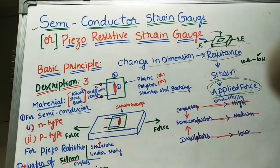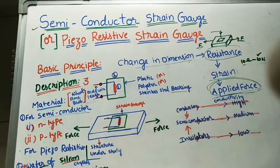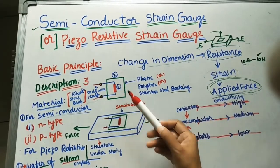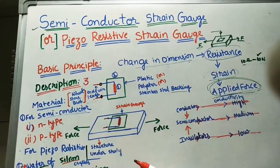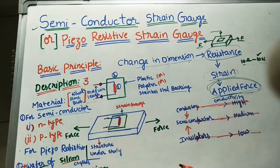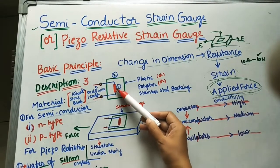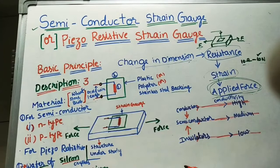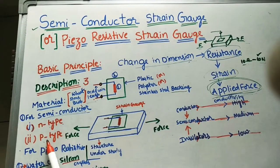Let us take the description of the first — the semiconductor strain gauge. It has three main parts. The first part is the semiconductor material. There are two types: N-type (negative semiconductor) and P-type (positive semiconductor).